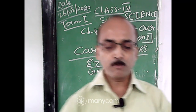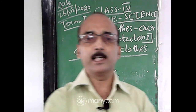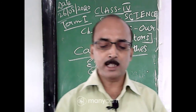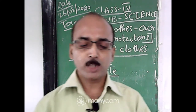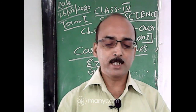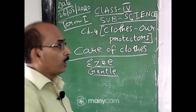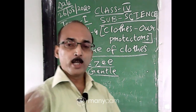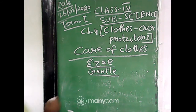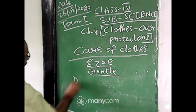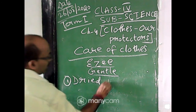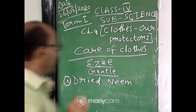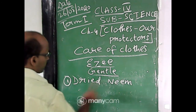Number four: give delicate and expensive woolen and silk clothes for dry cleaning. Number five: wrap silk and woolen clothes in a cotton cloth and store them with dried neem leaves or naphthalene balls. This will protect them from insects like moth and silverfish. Dried neem leaves are a very good antibacterial material.